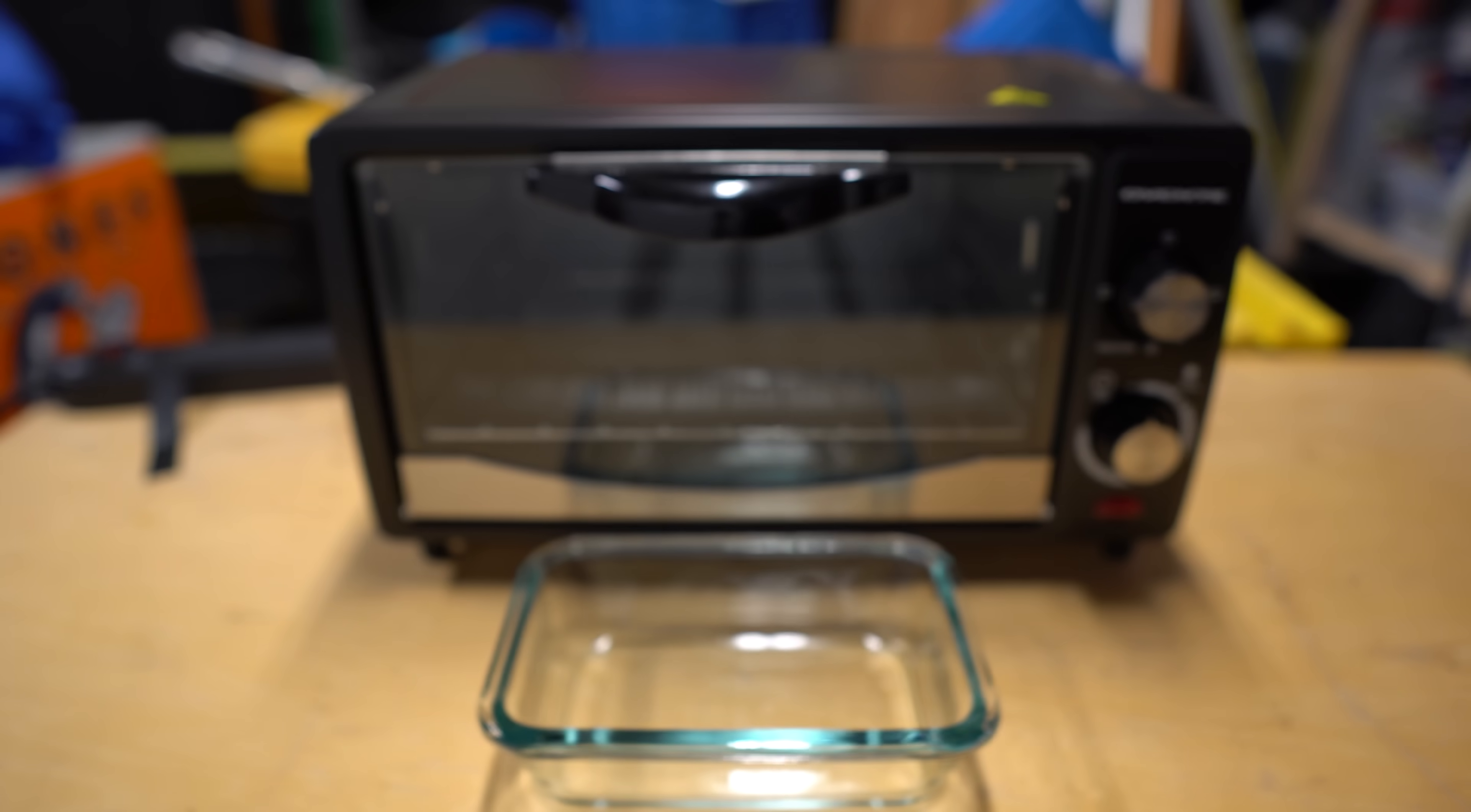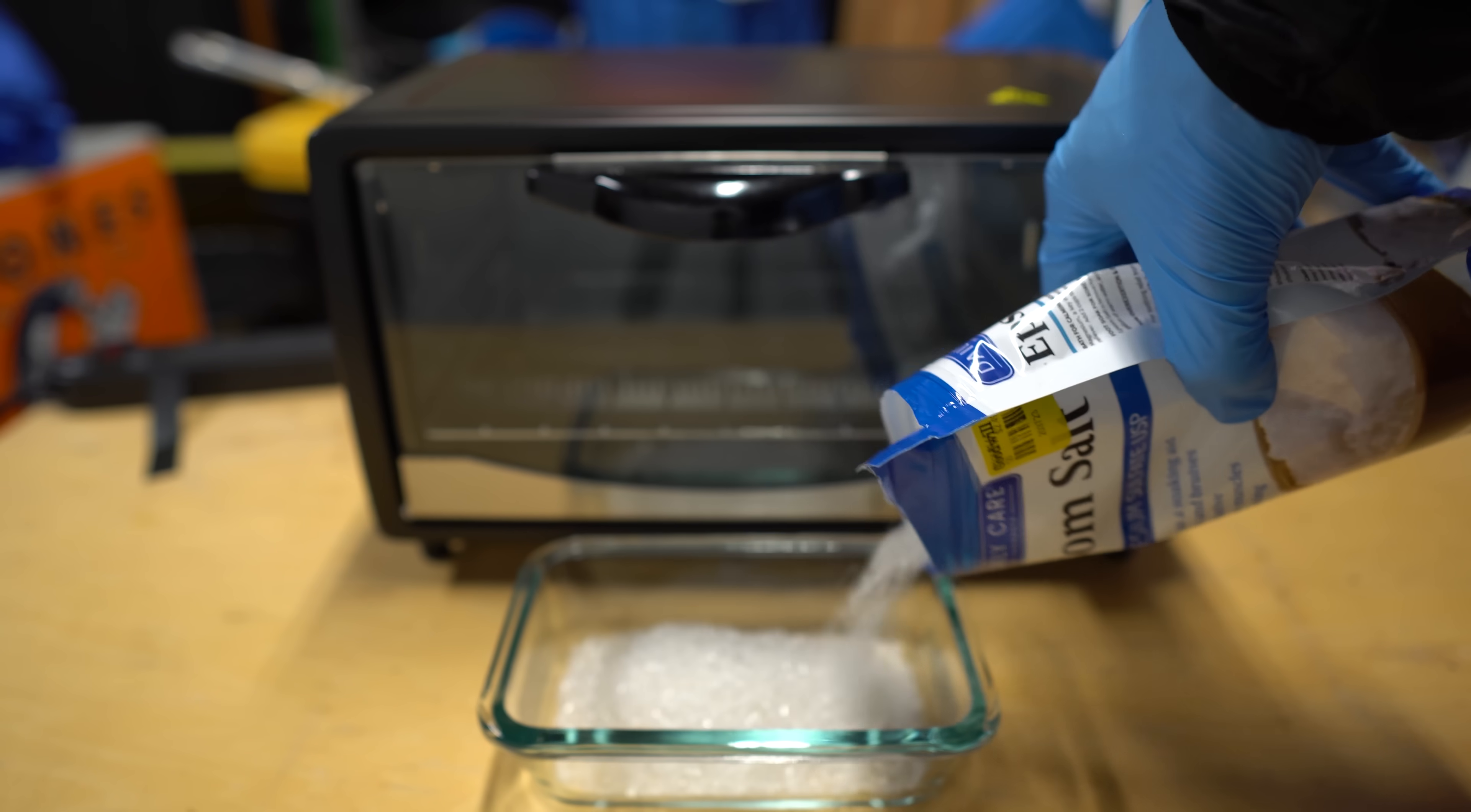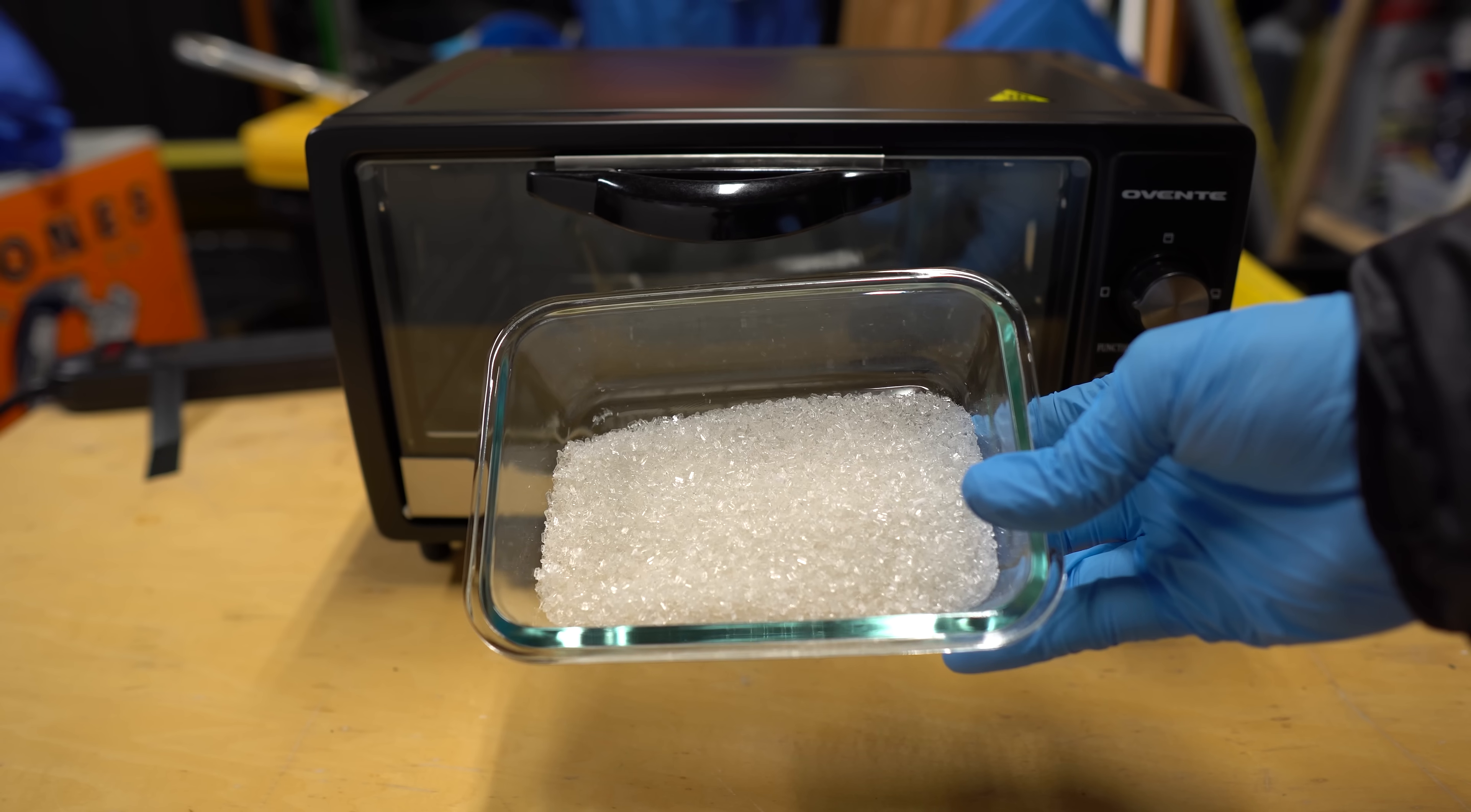First thing that we're going to do is actually make a drying agent. I'm using magnesium sulfate, which is just Epsom salt I got at my Goodwill, and I'm going to dry it in the oven so it can become anhydrous.